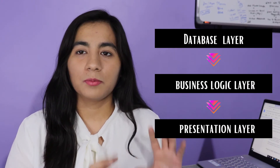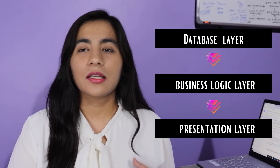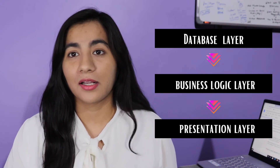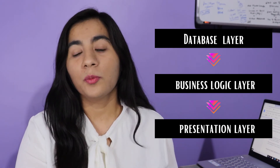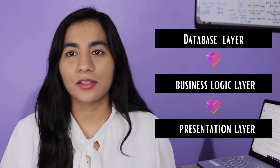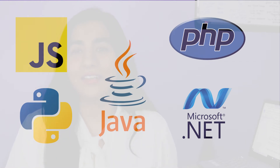Coming to the second layer — the business logic layer. This is the server side. In this layer, you have to work with logic. For example, if you have an e-commerce website and you click on Add to Cart, how does that product go to your cart and how is it saved? This whole logic falls under the business logic layer. To work with this layer, you use Java, Python, PHP, and similar languages. Those who feel more comfortable with logic can work well with this layer.